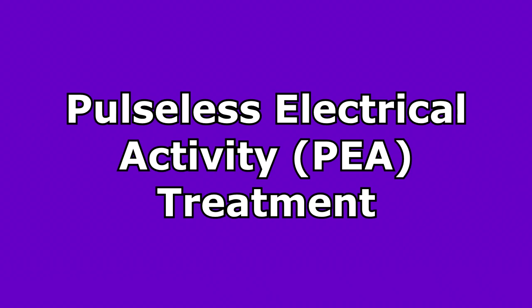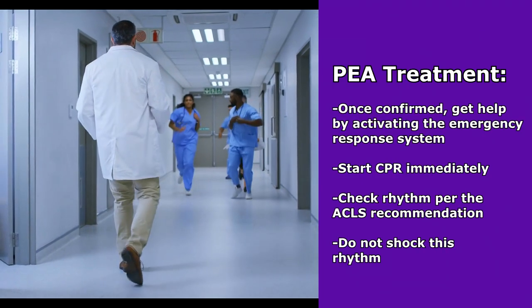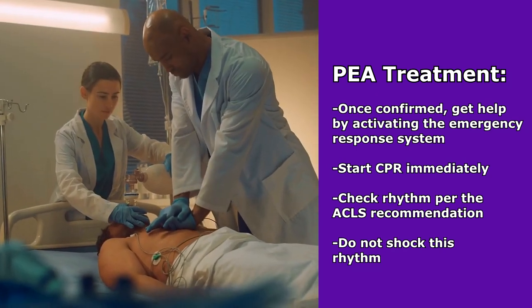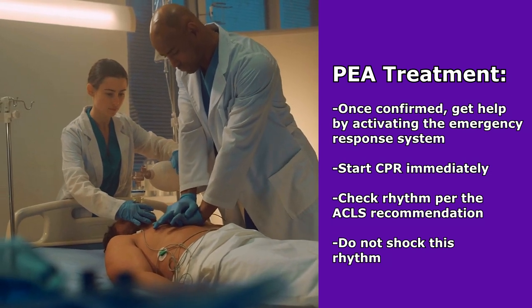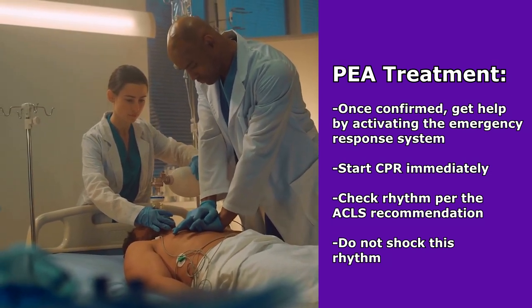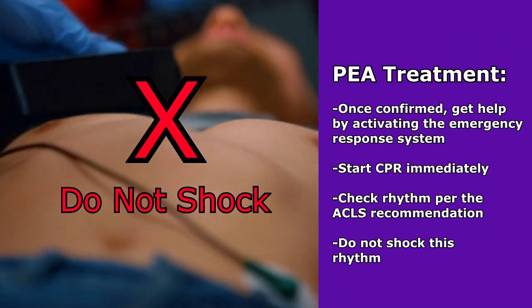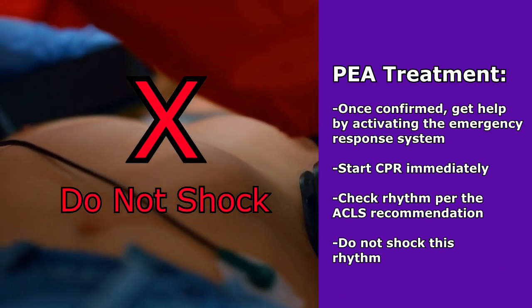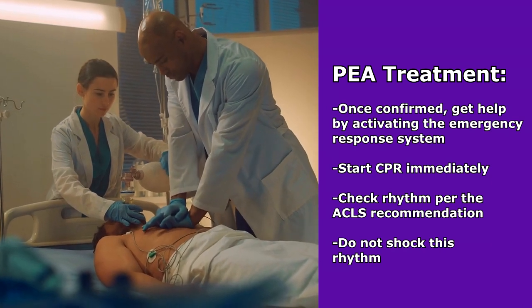What is the treatment for PEA? As a nurse, after you've confirmed that you do have PEA, you want to immediately activate the emergency response system — call code blue, call 911, and start CPR immediately. You'll be doing CPR, you'll have a team of people helping you, and you'll be doing rhythm checks per ACLS recommendations to see what kind of rhythm you have. One thing to remember about PEA is that it is a non-shockable rhythm — we cannot shock this rhythm. So we'll just continue CPR until we have a rhythm that we can shock.